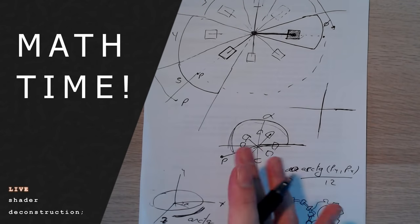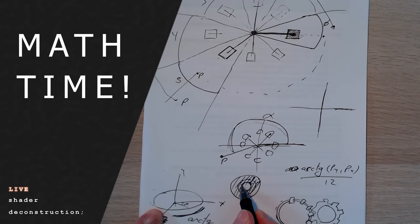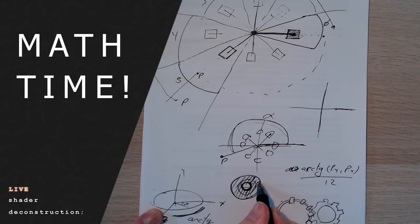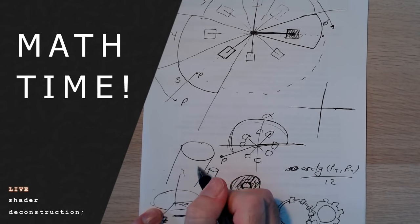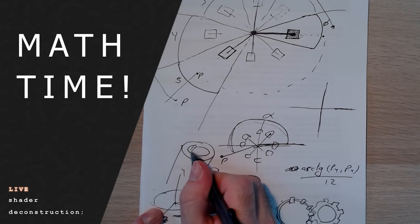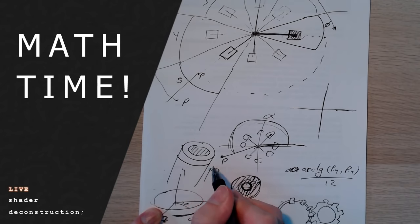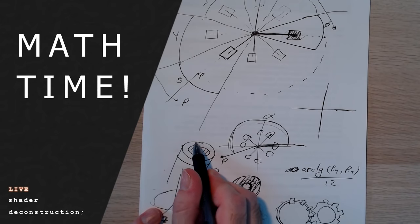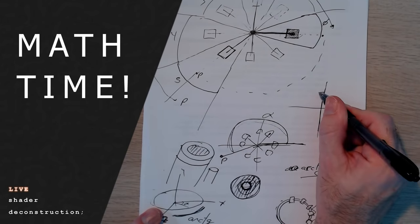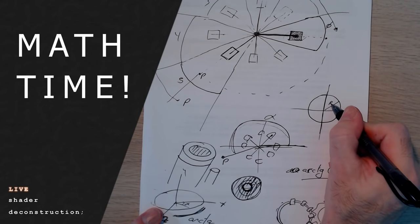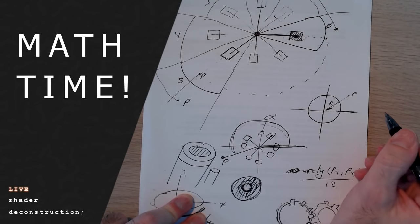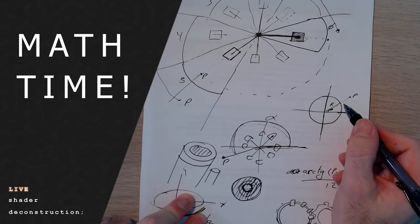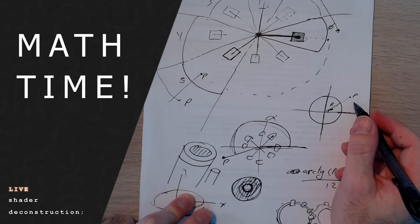This is another SDF trick. If you wanted to make a ring normally, you'd create a big cylinder and subtract a smaller one, then cut it — that's three operations. But with SDFs, once you have the distance to a circle of radius R, you take the absolute value of the distance, so points inside (negative distance) become positive. Then you subtract a number again, which creates a new interior — the ring shape.